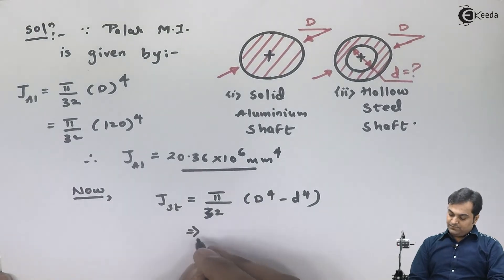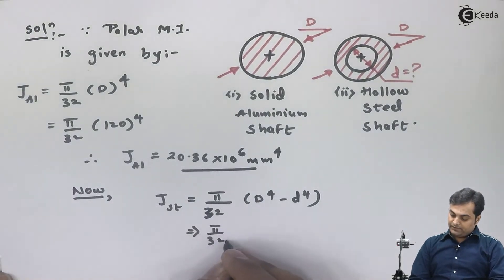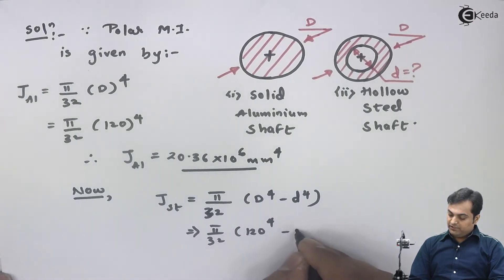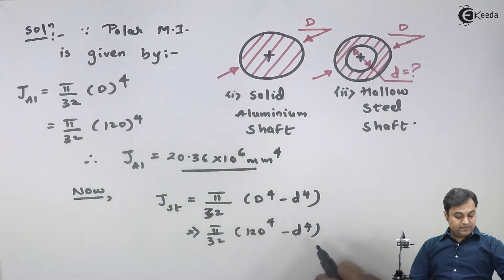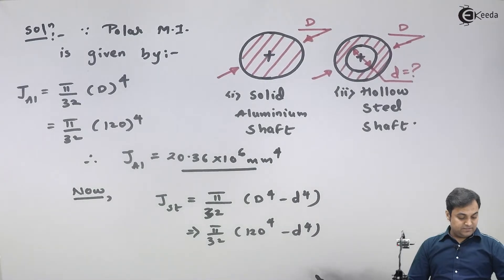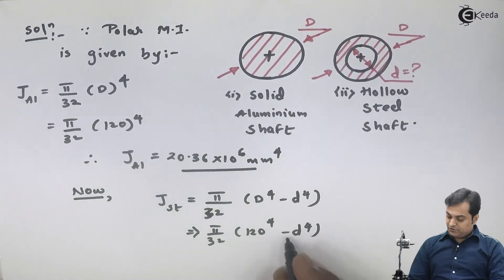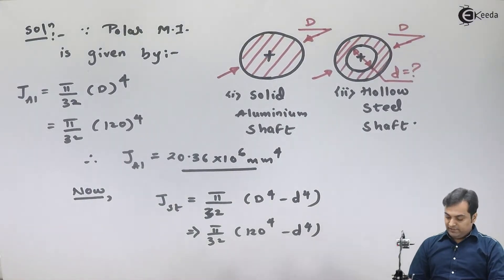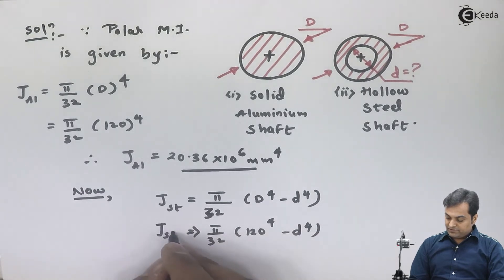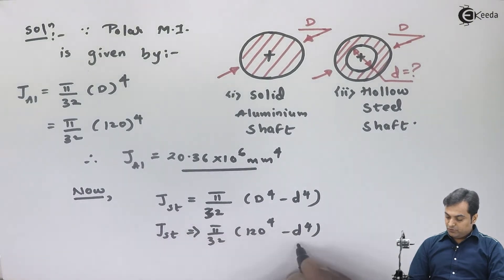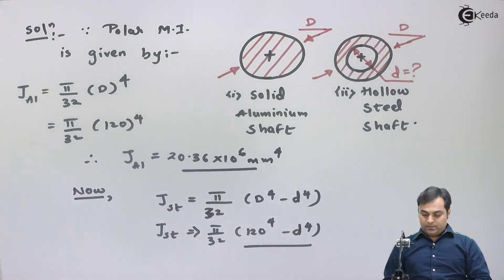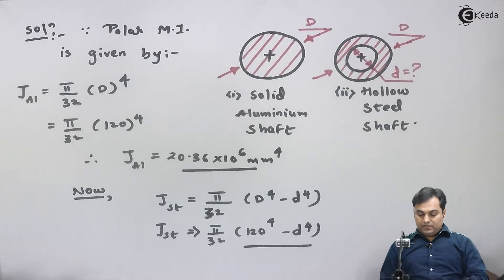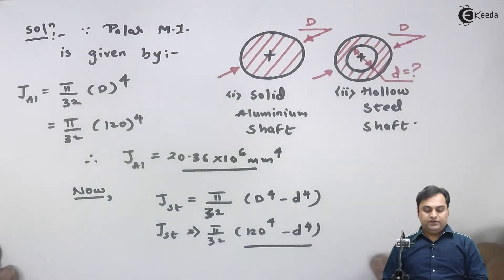This becomes pi/32 times (120^4 minus d^4), where capital D is 120 mm and small d is what we have to calculate. I will keep d as it is since we don't know its value — that is what we need to find. This is the polar moment of inertia expression for the steel shaft.